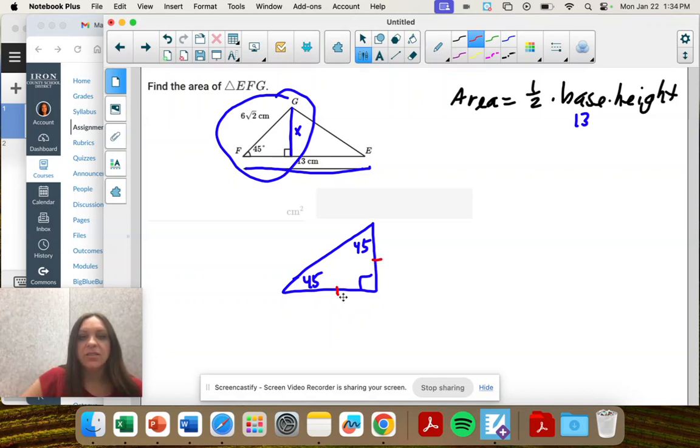You take the legs, so let's call them X. They're the same, just like the angles, and the hypotenuse is that value times the square root of two.